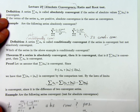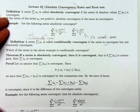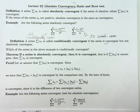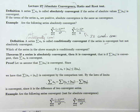So absolute convergence implies ordinary convergence. We have to be careful with this — the opposite doesn't hold. If a series is absolutely convergent, then I can conclude immediately that it converges. But if it's not absolutely convergent, that does not mean the series itself diverges. So like many of these tests, I have to be careful using this result.